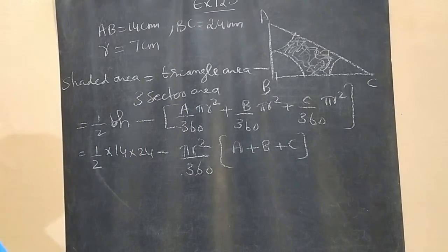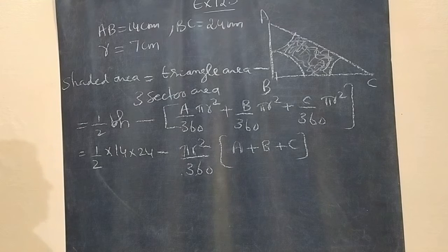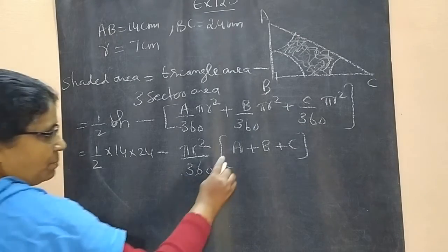What is A plus B plus C? It is the sum of 3 angles in a triangle. So, by angle sum property,